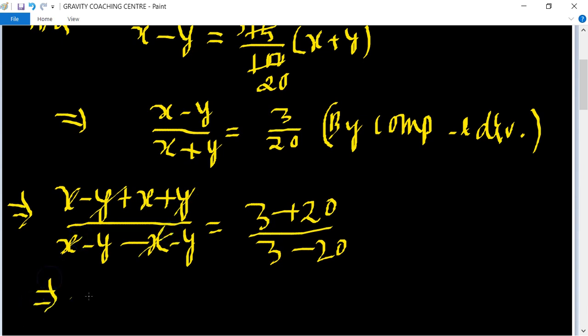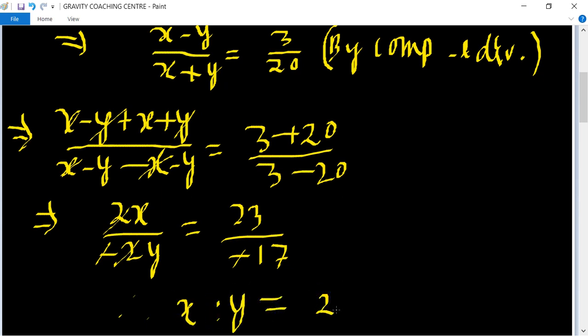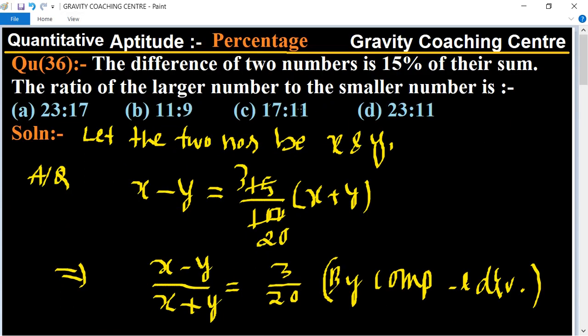The minus signs cancel and the 2s cancel, therefore x ratio y equals 23 ratio 17, which is the required answer. Option D, 23:17, is the right answer.